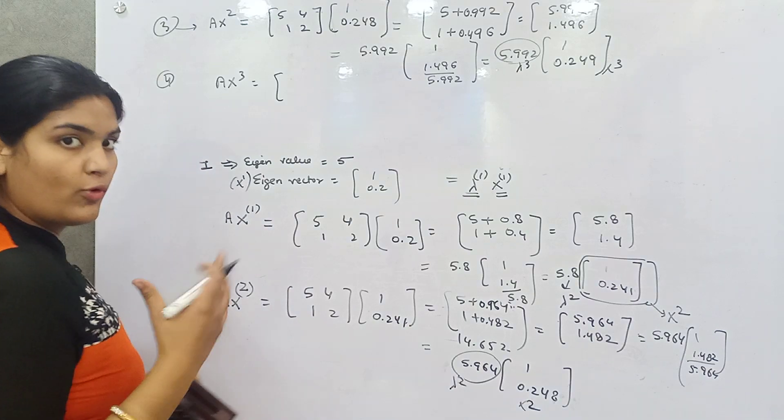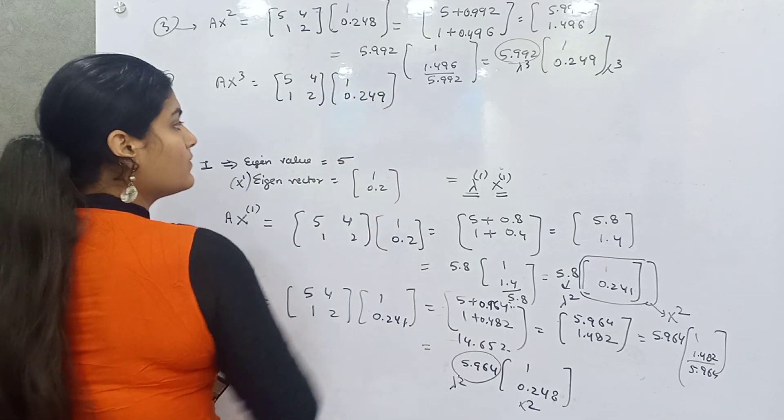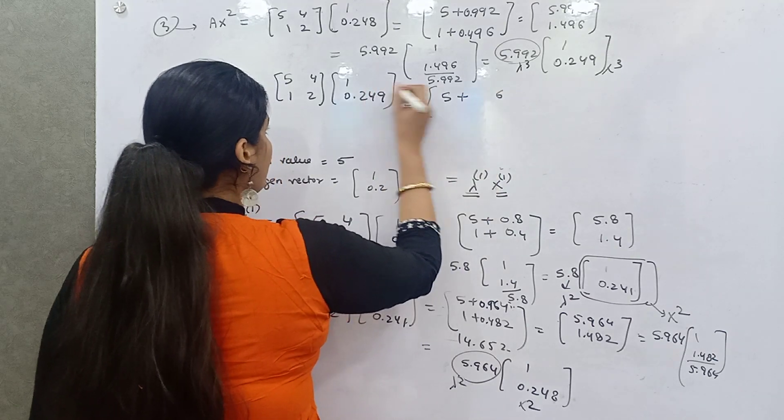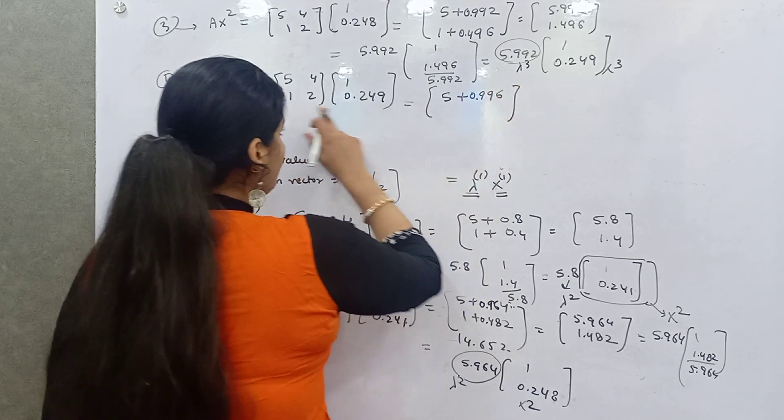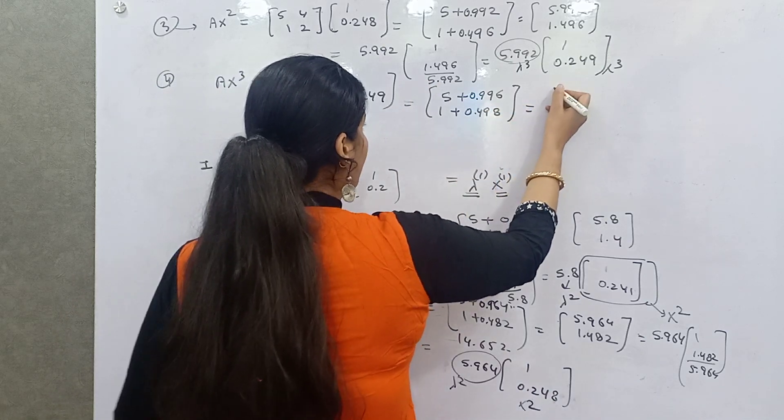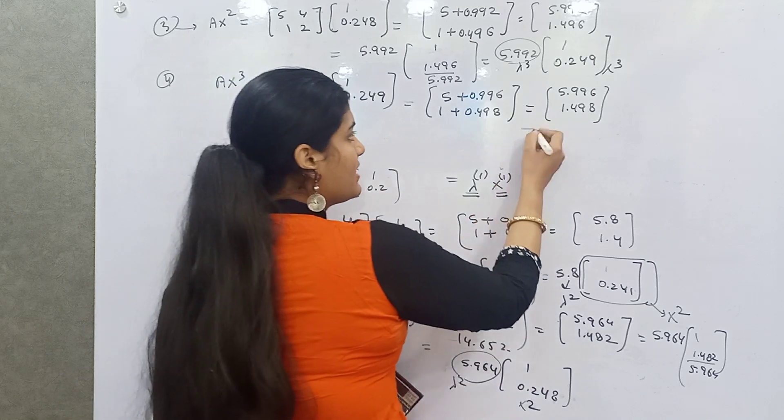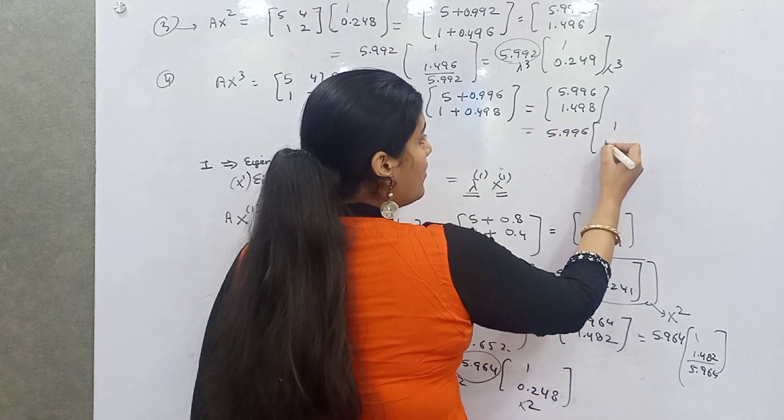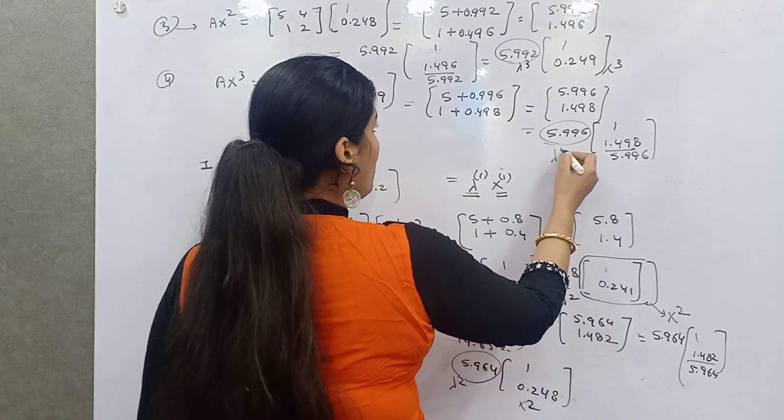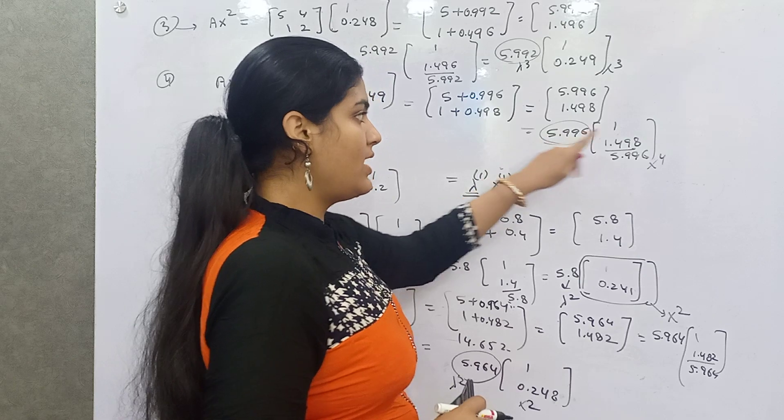So A is this and X3 is [1; 0.249]. If you multiply this, 5 times 1 is 5 plus 4 times this: 9 plus the 36, 4 plus the 16 is 19, 4 times this is 9. Then 1 times this: 9 to the 18, 4 times this, 9 to the 9, 2 to the 4. Then 5.996 and 1.498. You have to take 5.996 common, and 1.498 by 5.996. This is your lambda 4 and this is your X to the power 4. This was your fourth eigenvalue and this is your fourth eigenvector.